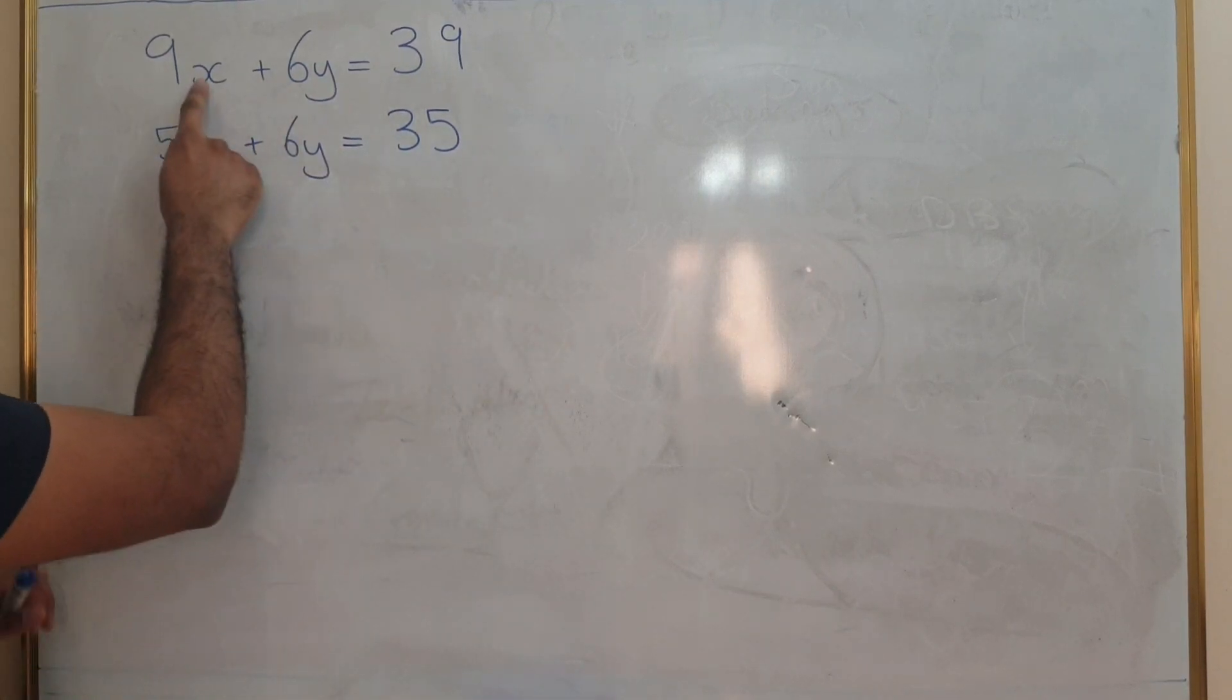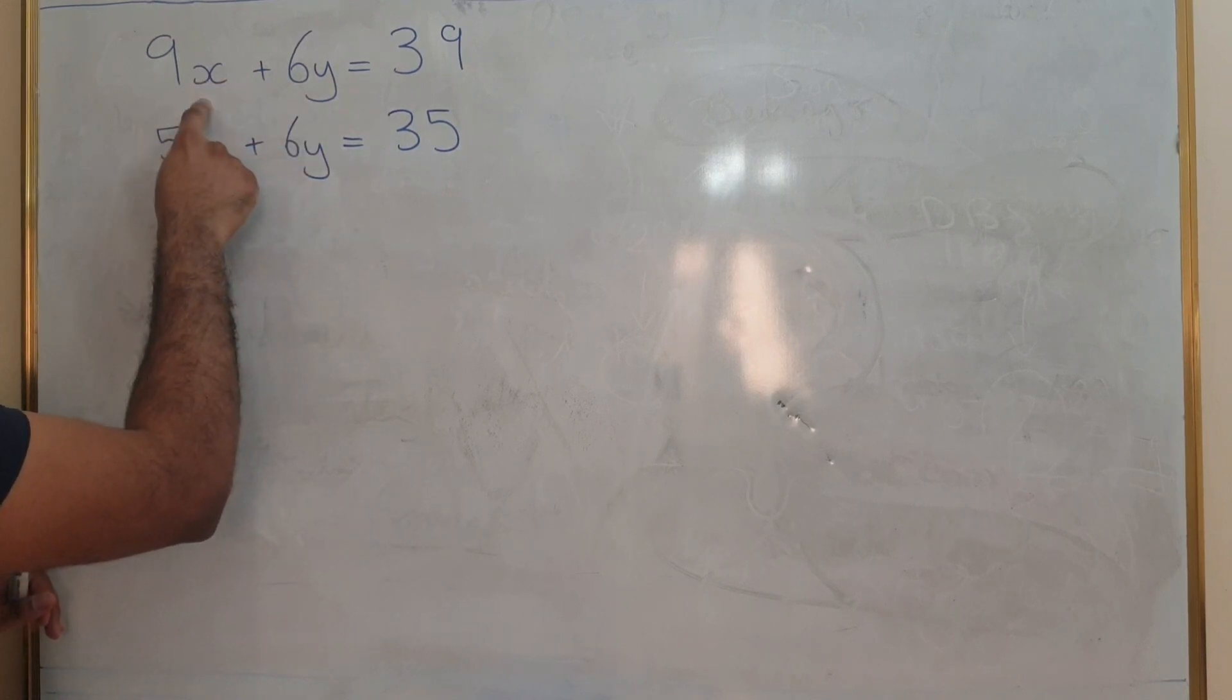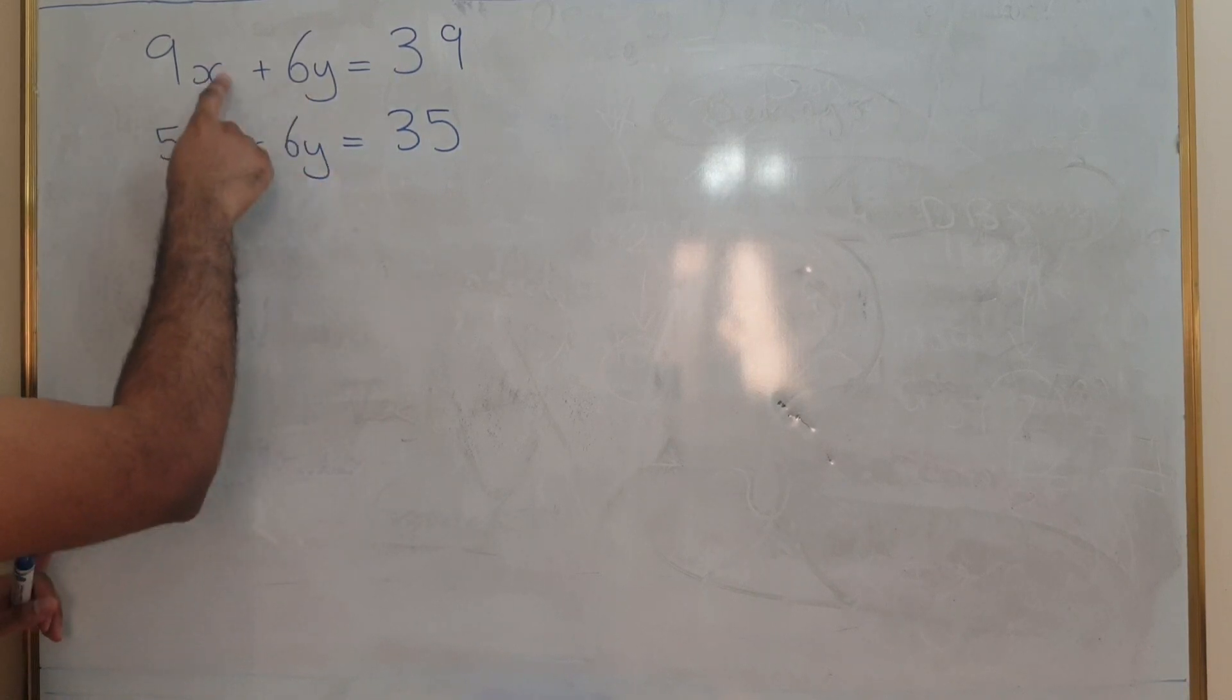We have two unknowns. One is an x, one is a y. So we're trying to solve x and y and it should be the same in both equations.